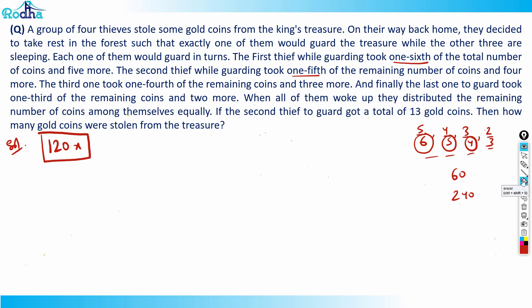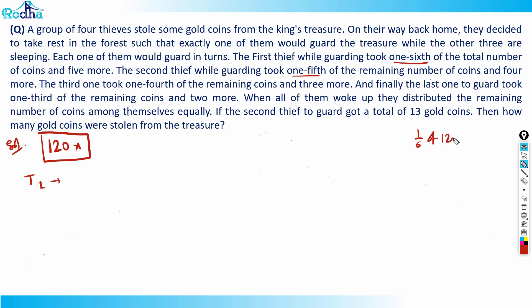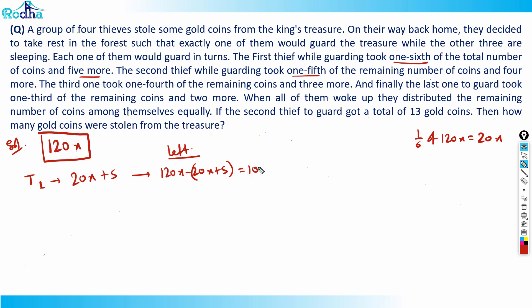Starting with 120x eliminates all the fractions. So let's say 120x was the number of coins stolen from the treasure. The first thief while guarding took one sixth of the total coins and five more. One sixth of 120x is 20x, so he took 20x plus 5. What is left now? 120x minus (20x + 5) = 100x minus 5.